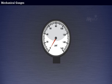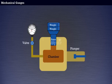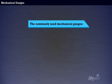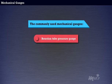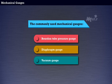Mechanical gauges are defined as the devices used for measuring the pressure by balancing the fluid column by spring or dead weight. The commonly used mechanical gauges are Bordon tube pressure gauge, diaphragm gauge and vacuum gauge. Let us discuss them one by one in detail.